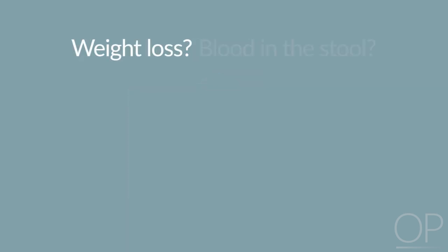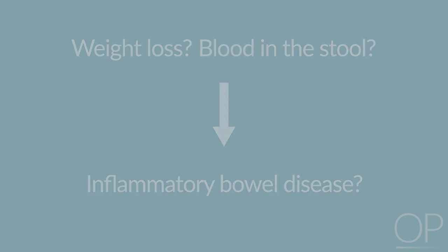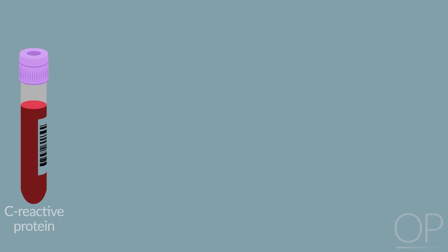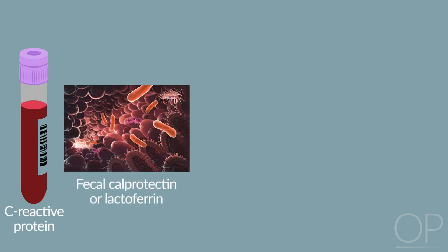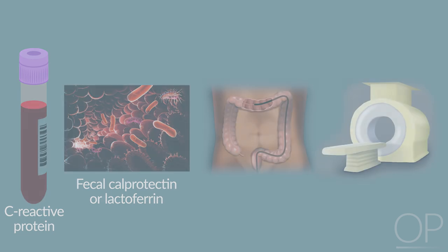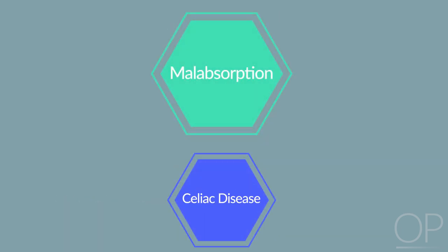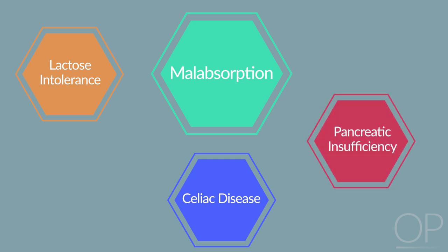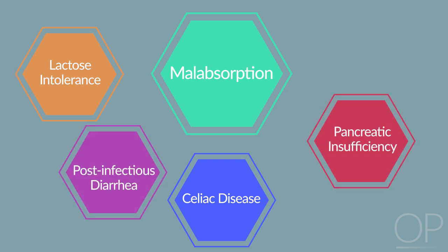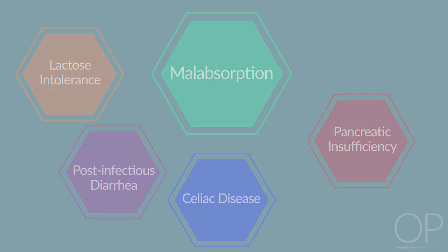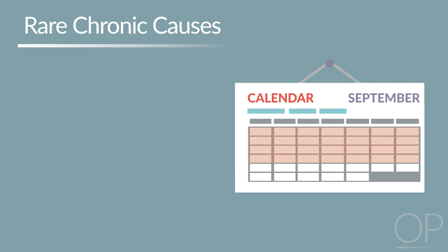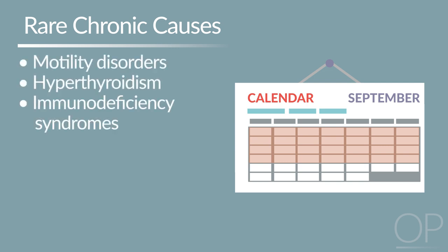Chronic causes of diarrhea should be thought about differently. A history of weight loss or blood in the stool should prompt a workup for IBD, which likely includes blood work for inflammatory markers such as C-reactive protein, stool studies such as fecal calprotectin or lactoferrin as markers for neutrophil activity, colonoscopy, and abdominal imaging. Weight loss can also be an early sign of celiac disease, for which tissue transglutaminase immunoglobulin antibody testing should be obtained. Celiac disease is also on the differential for patients suspected of malabsorption, along with lactase deficiency, pancreatic insufficiency, and post-infectious diarrhea that can occur due to villus atrophy from mucosal injury. More rarely, chronic diarrhea can be caused by motility disorders, hyperthyroidism, or immunodeficiency syndromes.